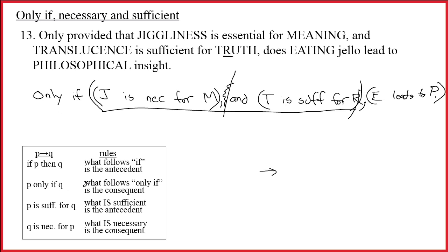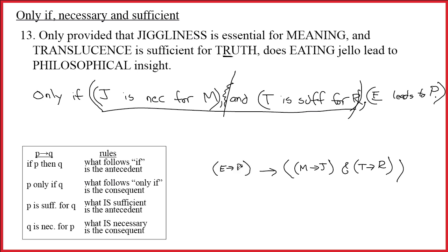The ONLY IF is the main connective, working with the second comma. We need another set of parentheses grouping the whole 'J necessary for M and T sufficient for R' block. What follows ONLY IF is the consequent — so that entire block is the consequent. Its main connective is an ampersand. J is necessary for M: what is necessary is the consequent, so M→J. T is sufficient for R: what is sufficient is the antecedent, so T→R. E leads to P: E→P. Final: (E→P)→((M→J)∧(T→R)).